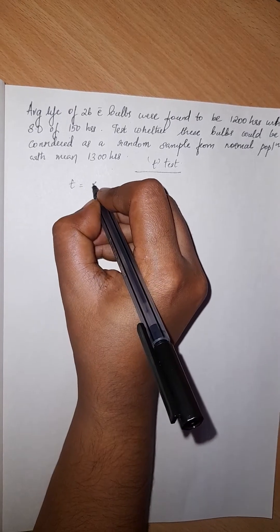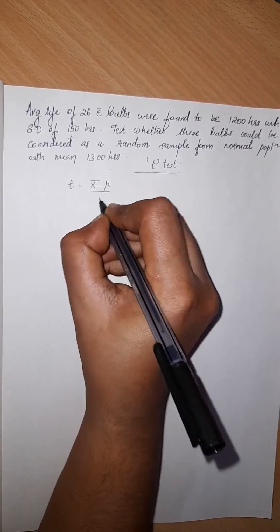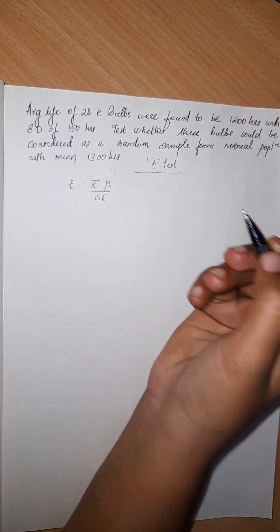The t-test equation: t is equal to x-bar minus mu divided by standard error.